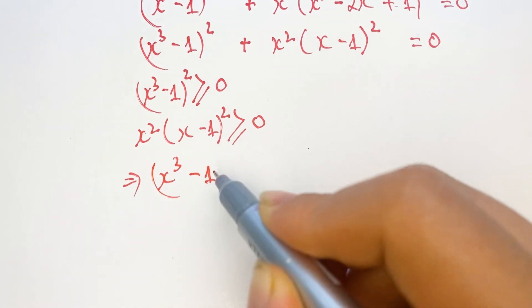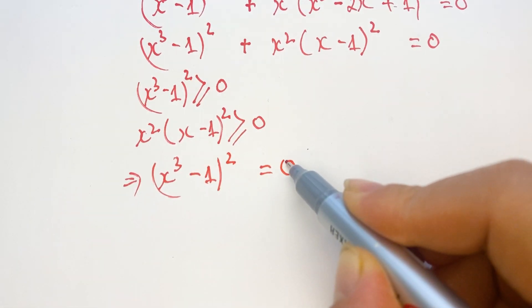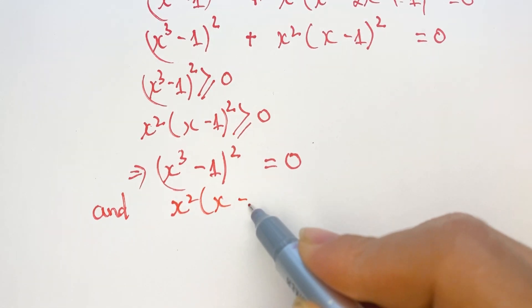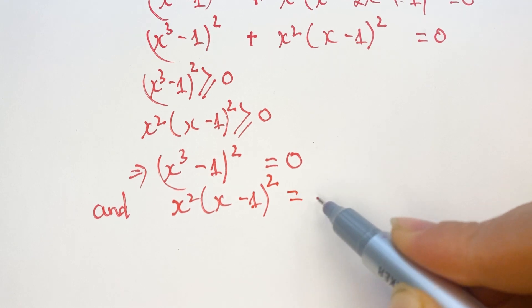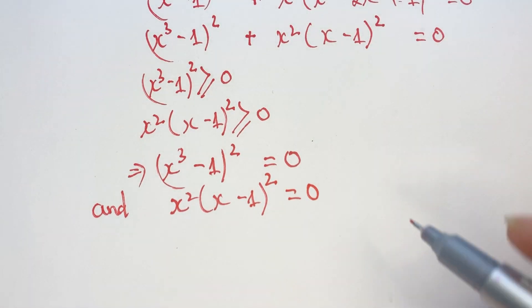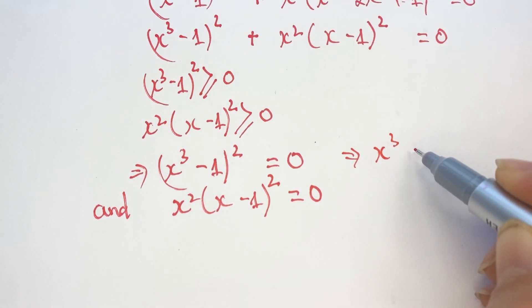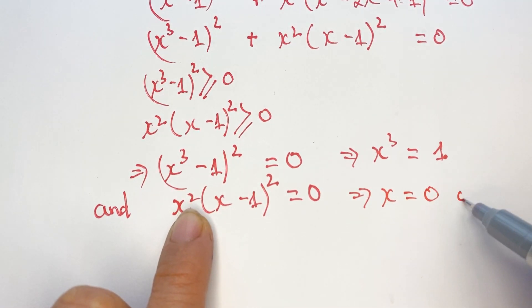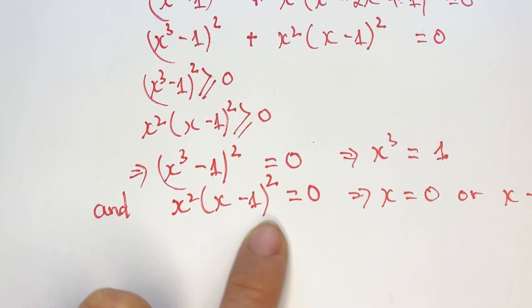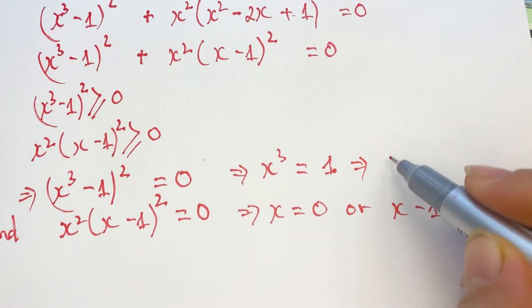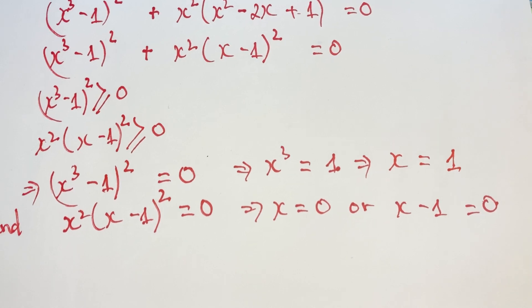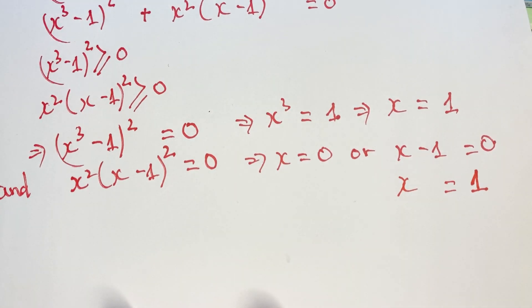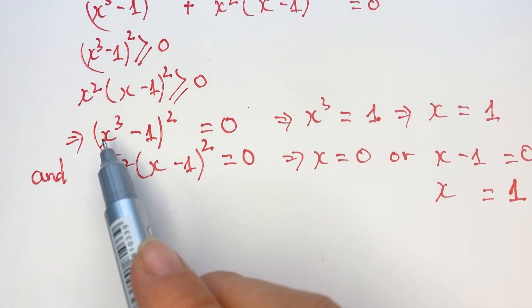Therefore, (x minus 1) squared equals 0, which gives x squared equals 1. So x equals 0, or x minus 1 equals 0, giving x equals 1.